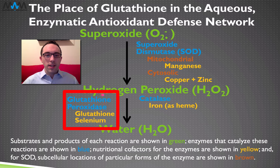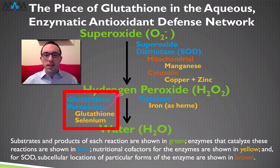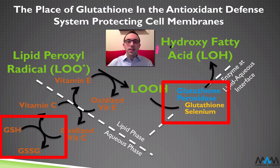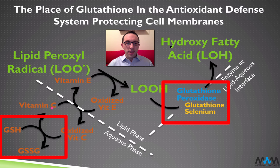We saw before that glutathione is a cofactor for glutathione peroxidase, and in the aqueous portions of the cell that's going to help convert hydrogen peroxide to water. We also saw that glutathione peroxidase is present in cellular membranes where it helps convert the more dangerous lipid peroxides into the less dangerous hydroxy fatty acids. And we've also seen that glutathione is recycling vitamin C.